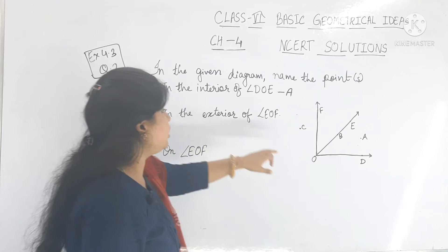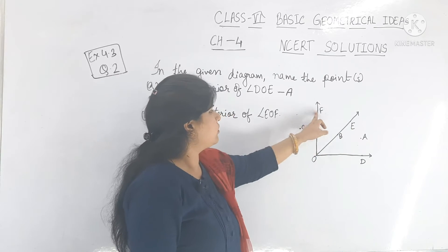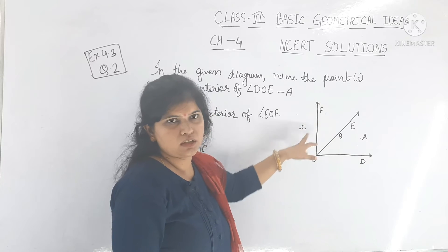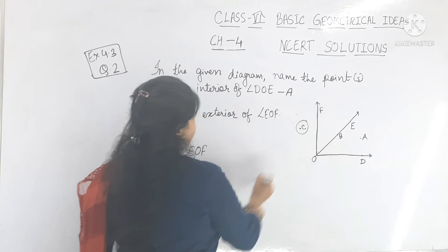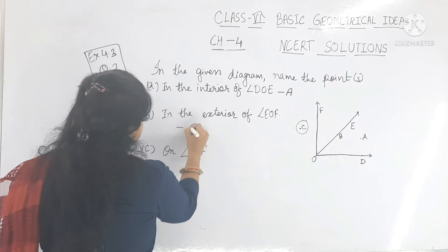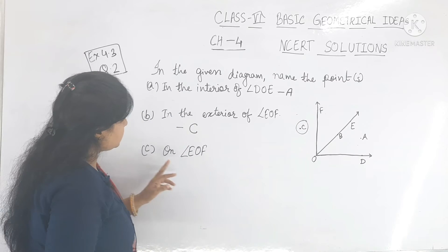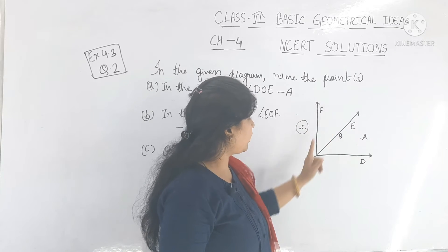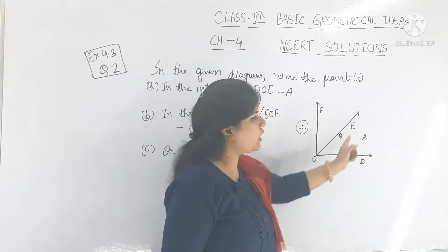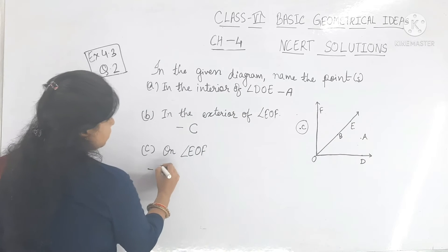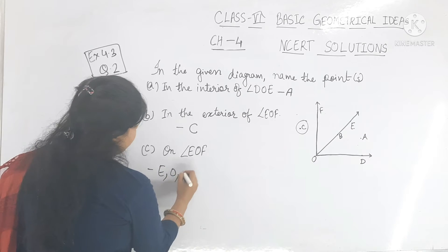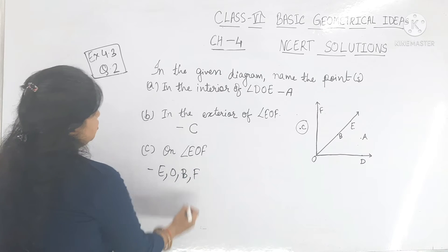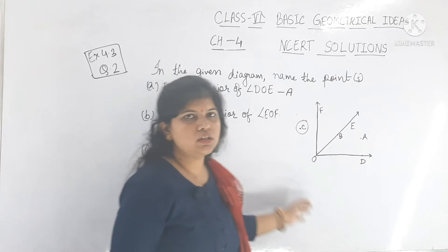Number B: in the exterior of angle EOF — this is the interior, and outside is the exterior, so the exterior point is C. Number C: points on angle EOF — there are 4 points. E, O, B, and F are the points on angle EOF.